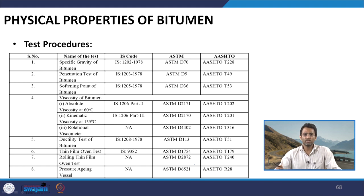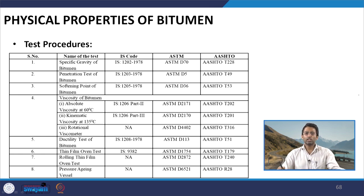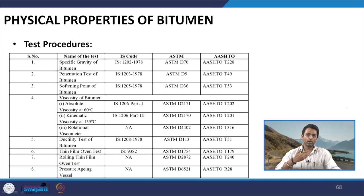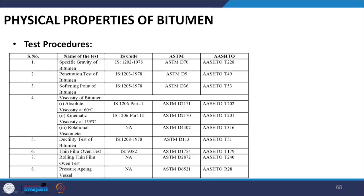Since we have discussed many physical properties of bitumen, the relevant IS codes, Indian specification codes, ASTM codes, and AASHTO codes are listed in a table for reference. Anyone interested can download or purchase these codes to review laboratory procedures for the different physical properties discussed. In the next lecture, we will start discussing about the viscoelastic properties of bitumen and the rheological experiments used to quantify them.